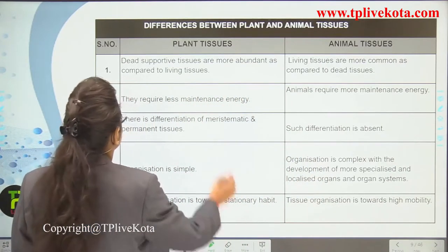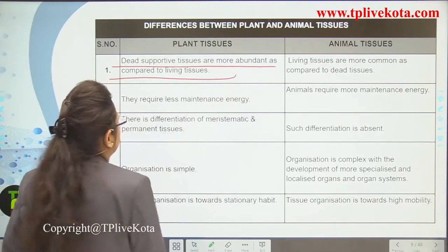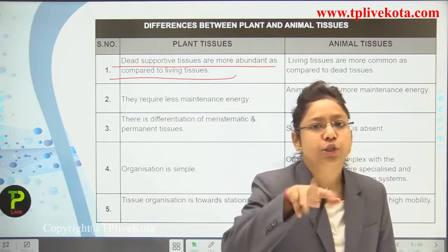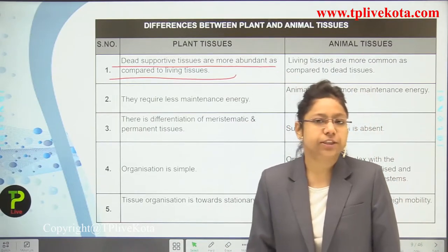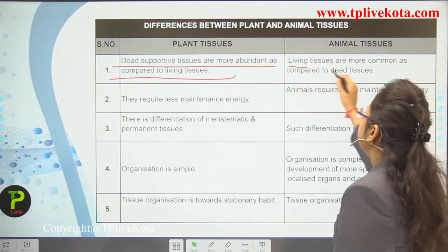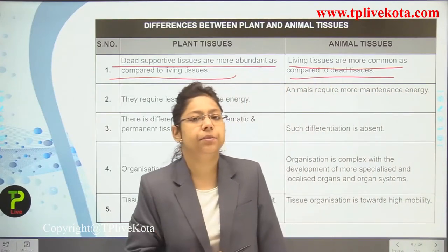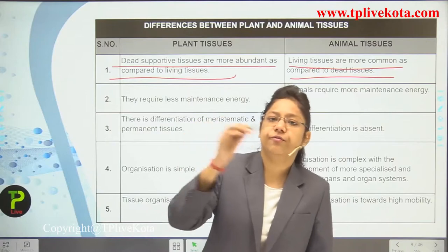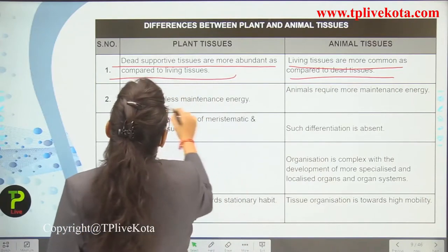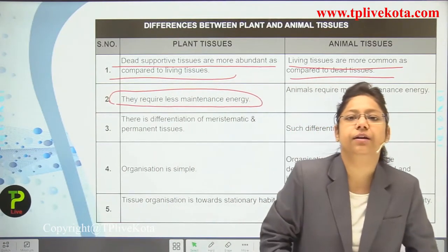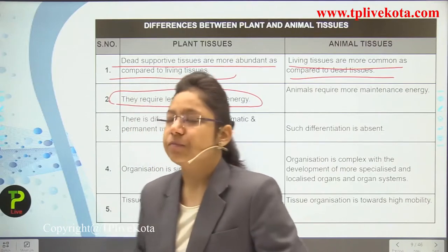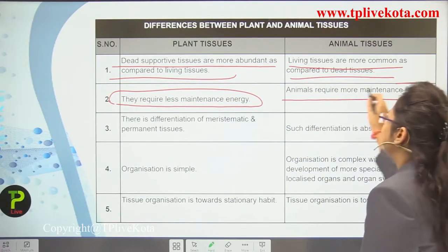Differences between plant and animal tissues: First, in plants, dead supportive tissues are more abundant compared to living tissues, because plants are non-mobile and do not need living tissues. In animals, living tissues are more common because animals are motile. Second, plants require less maintenance energy since they don't move, while animals require more maintenance energy.